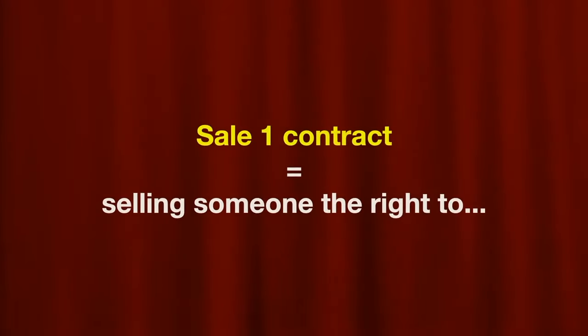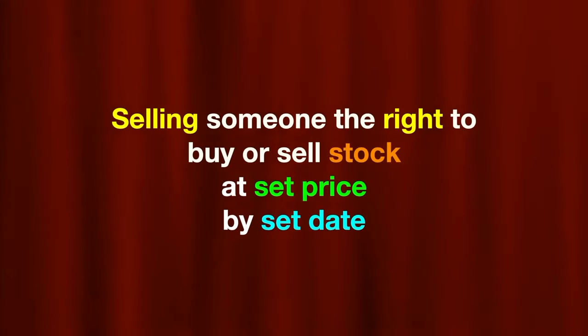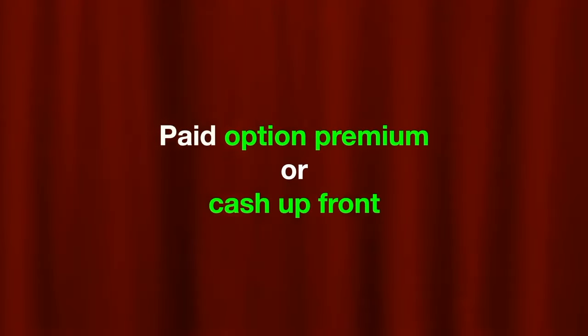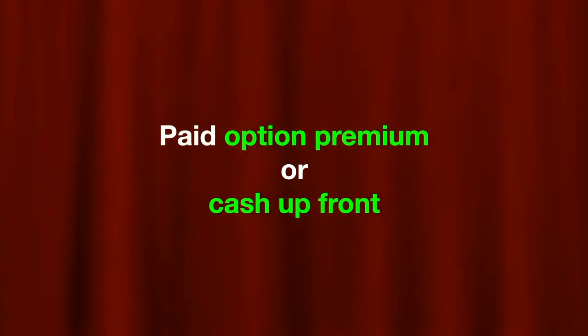That's how it works if you buy an option contract. However, you can also sell an option contract. If you sell an option contract, then you're simply selling someone else the right to either buy a stock from you or sell a stock to you at a set price by a set date. Since you're selling them that right, you're paid what's called option premium, or you're paid cash up front.